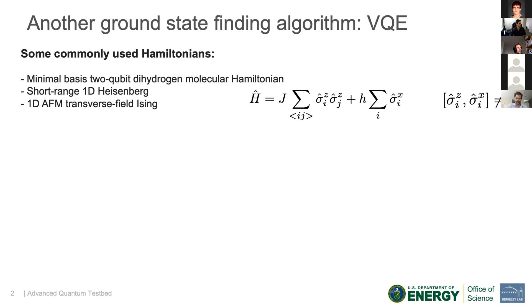Another type of algorithm which has attracted a lot of attention is the VQE algorithm in the NISQ era, but I will try to convince you that the QITE algorithm also has advantages. The VQE has been used to compute the ground state of several Hamiltonians: the two-qubit dihydrogen molecular Hamiltonian, some short-range 1D Heisenberg Hamiltonian, but the one we'll be focusing on for this talk is the 1D antiferromagnetic transverse field Ising model.